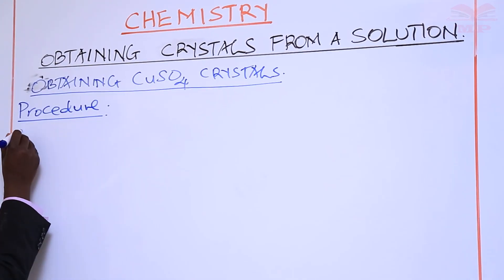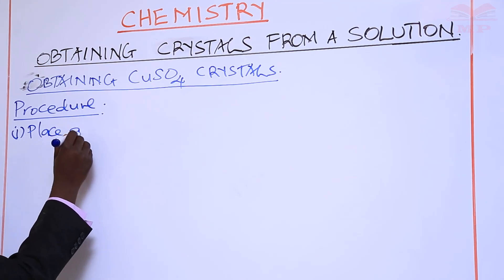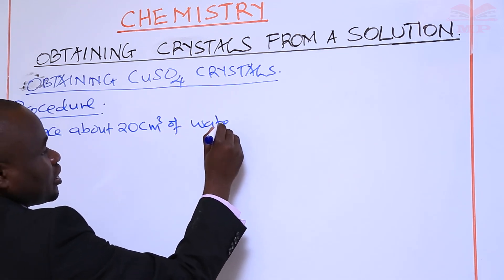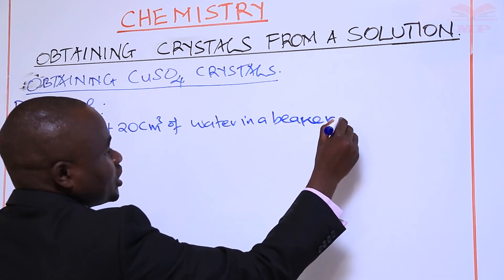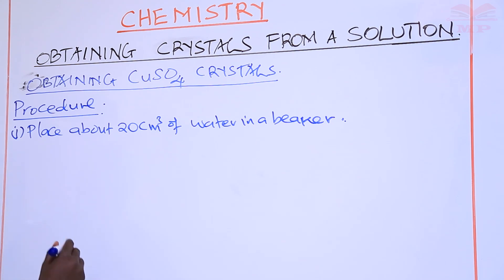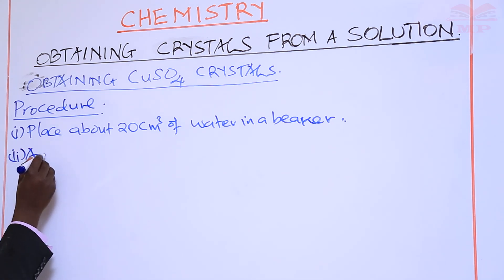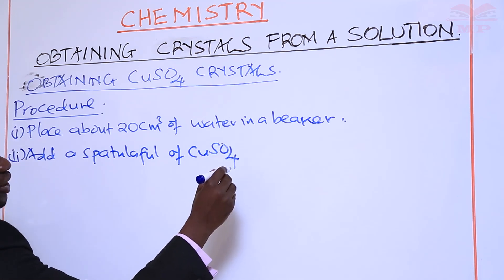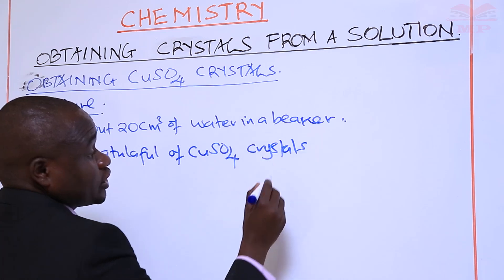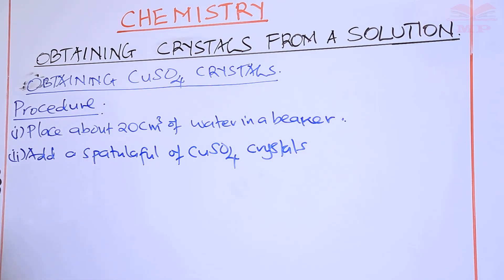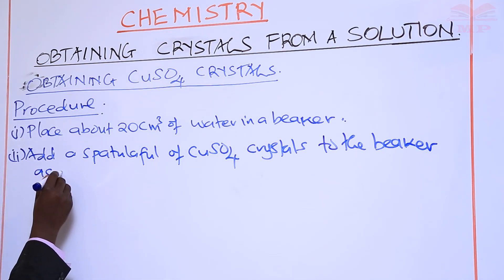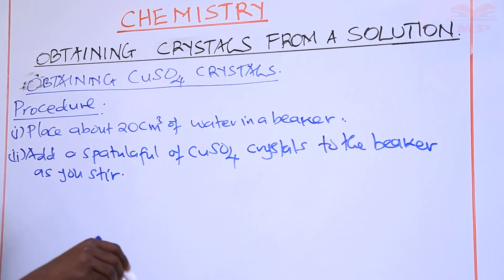First, you place about 20 centimeters cubed of water in a beaker — measure that using a measuring cylinder. Then number two, you add a spatula full of copper sulfate to the beaker as you stir. We are preparing the solution first, and from the solution we shall obtain the crystals.